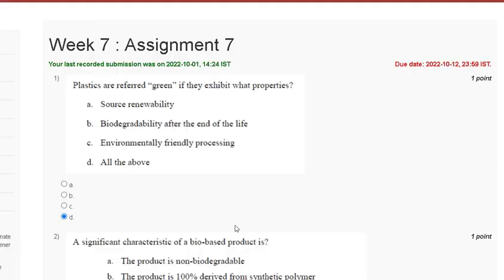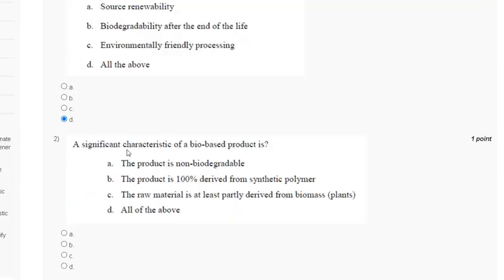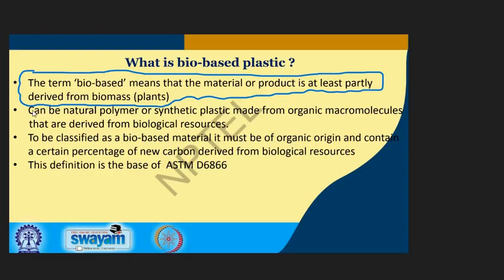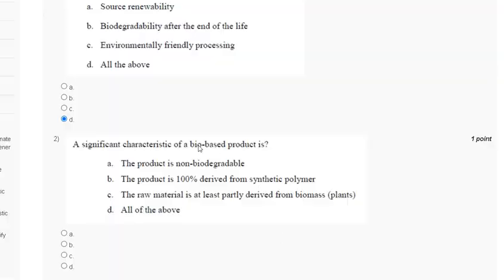Question 2: A significant characteristic of bio-based production is — the product is non-biodegradable; the product is 100% derived from synthetic polymer; the raw material is at least partially derived from biomass; or all of the above. The term bio-based means that the material or product is at least partially derived from biomass. The correct answer to question 2 is option C.